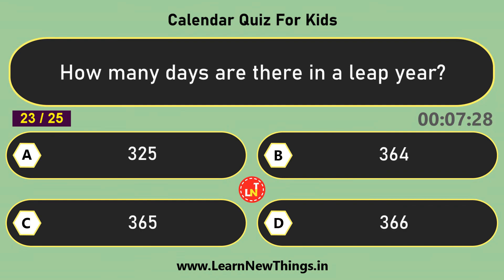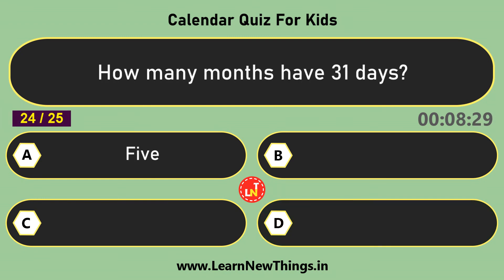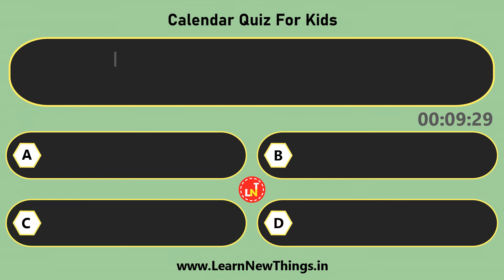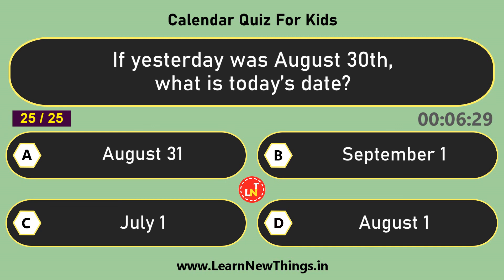How many days are there in a leap year? 366. If yesterday was August 30th, what is today's date? August 31st.